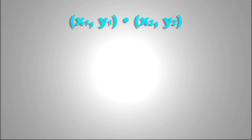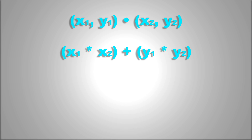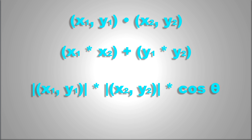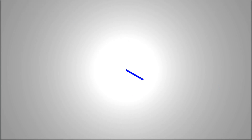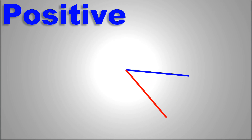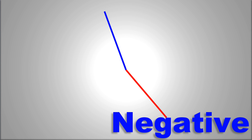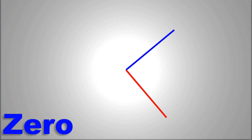A dot product is basically multiplying each component of two vectors and adding it all together, which happens to be equal to the two vector lengths multiplied by the cosine of the angle between them. Put simply: if they're pointing in the same direction, it's positive; if they point away from each other, it's negative; and if they're perpendicular, it's zero.